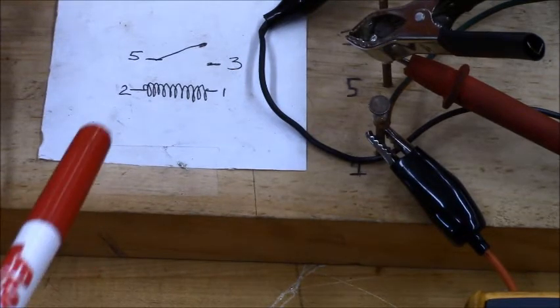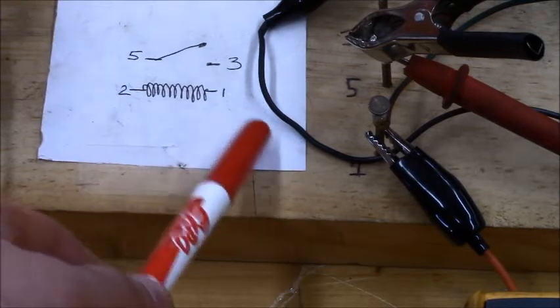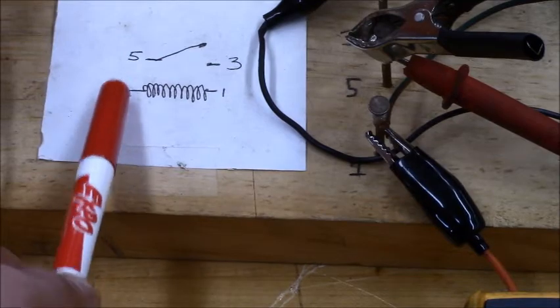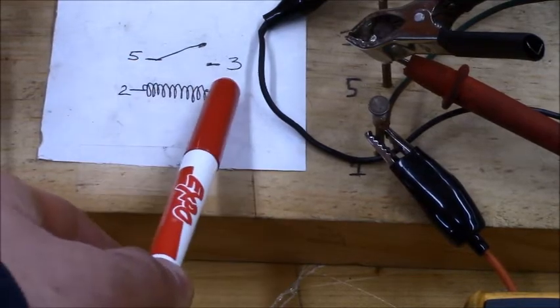All right, we're going to look at a relay, and I've got a relay on paper right here, and this is the low current side right here, pin one and pin two, and this is the high current side, pin five and pin three.